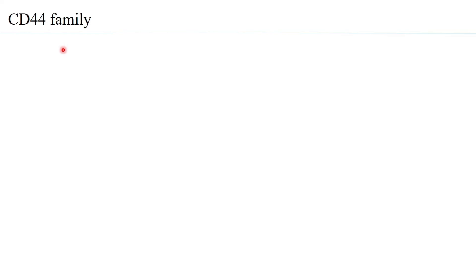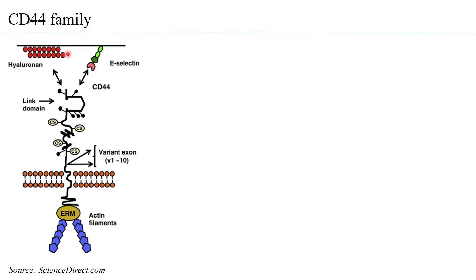Then there is the CD44 family. CD44 is a polypeptide associated with certain sugar constituents — it is basically a glycoprotein structure. It has a transmembrane domain and a cytoplasmic domain, and the cytoplasmic domain can interact with actin filaments within the cell.